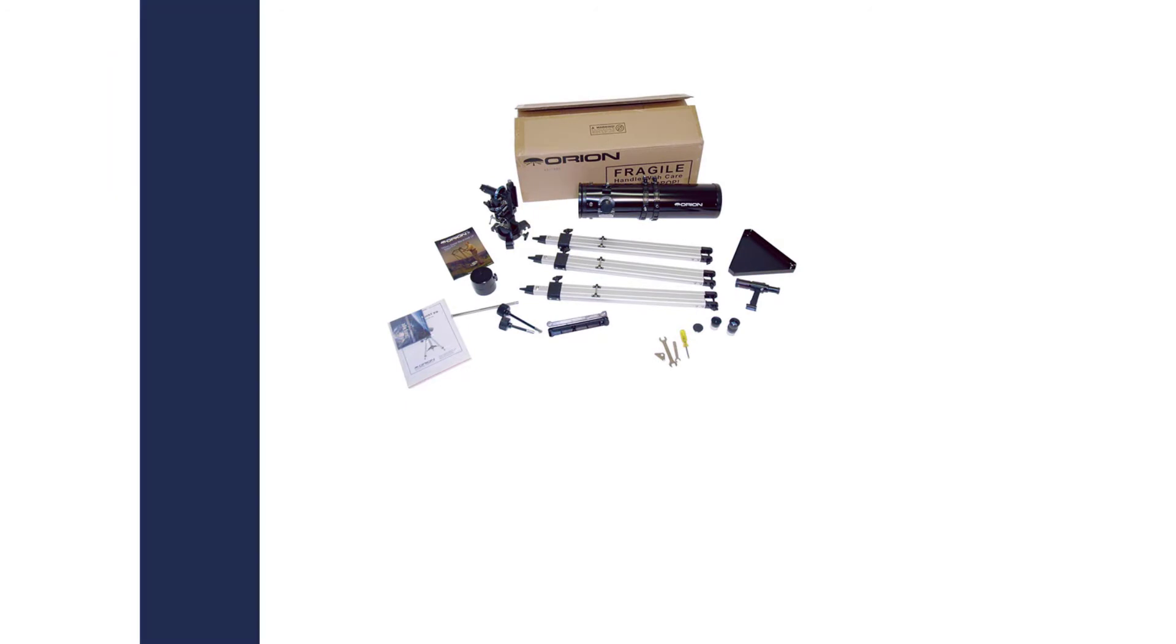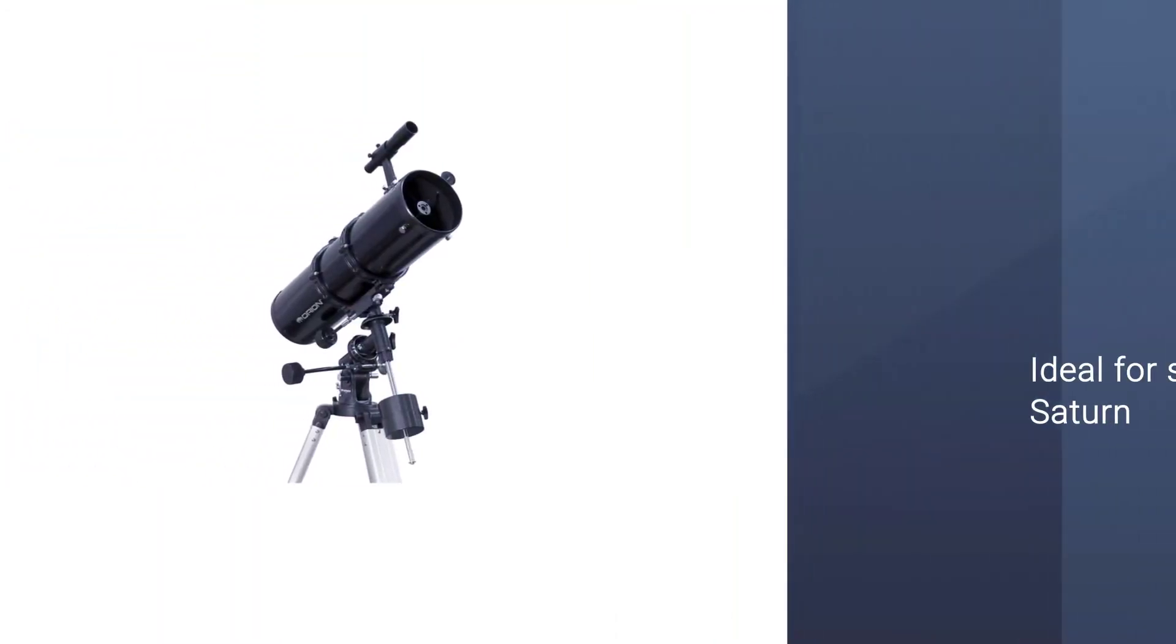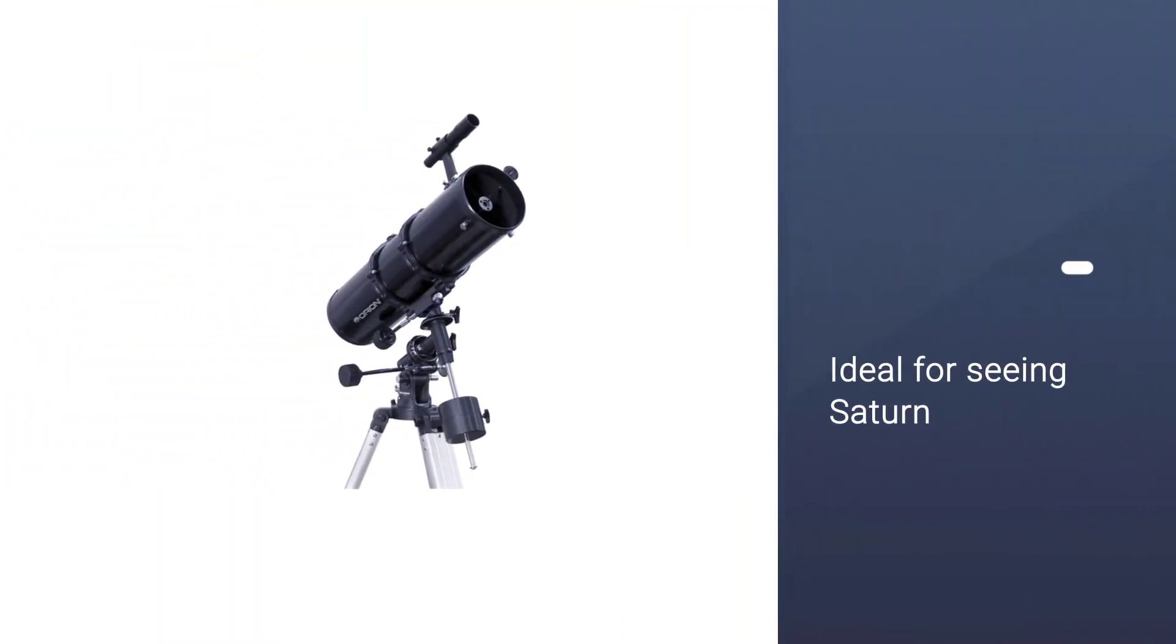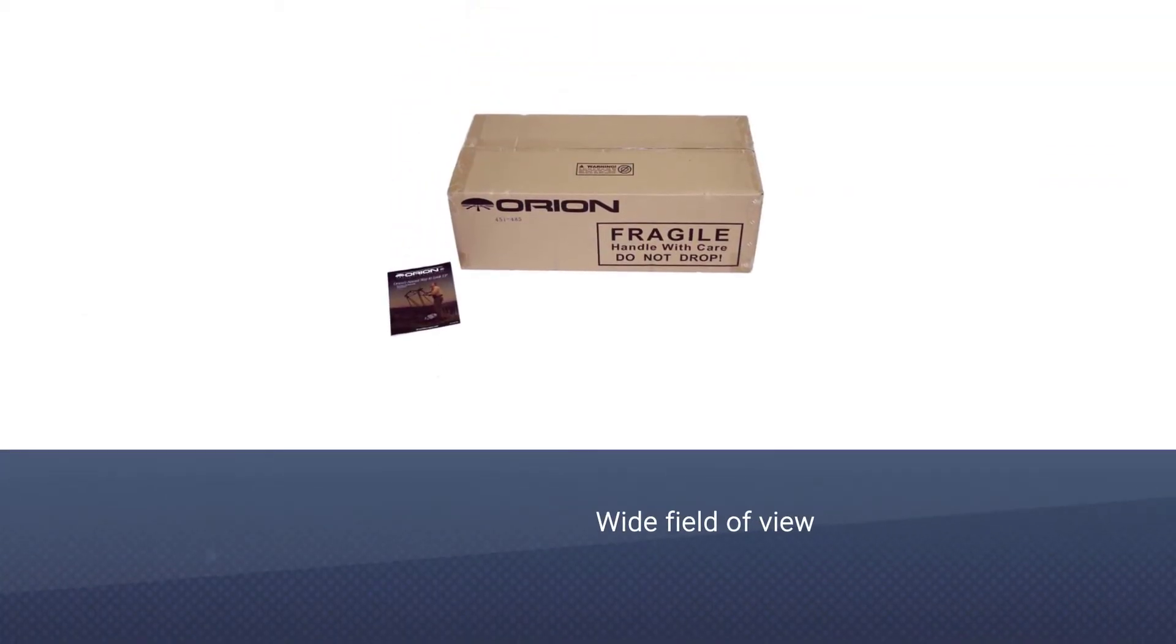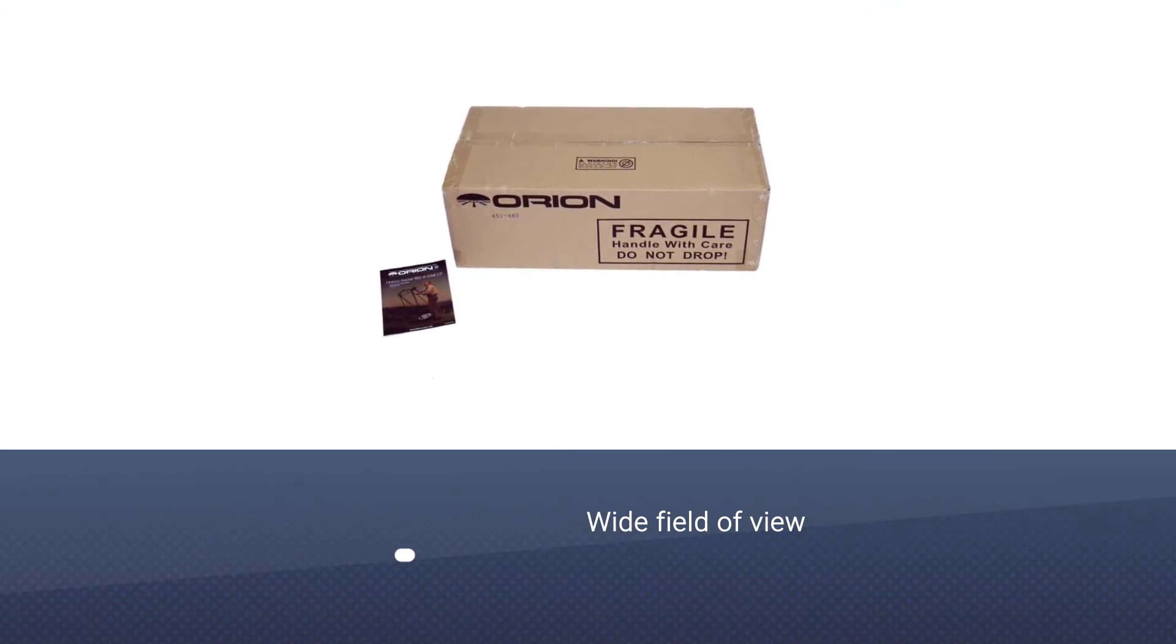Number four: Orion 09007 SpaceProbe 130 ST Equatorial Reflector Telescope. The Orion SpaceProbe 130 ST equatorial reflector telescope is an excellent telescope for seeing Saturn. It is ideal for intermediate or beginner stargazers. Although a beginner may find it a little expensive, a serious minded beginner will find a lot to like about this telescope.